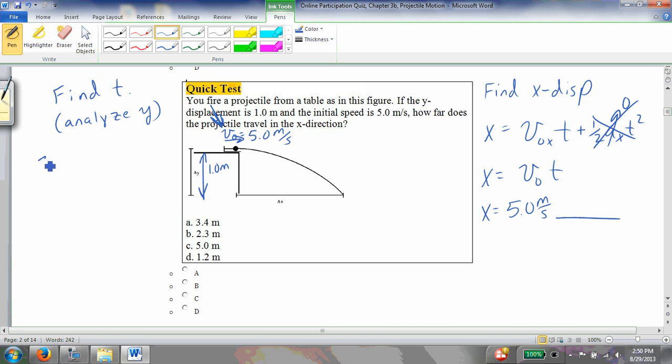All right, so find the t. Let's write down what we know. We know that y is equal to negative 1.0 meters. That's saying that y_not equals 0 up here, and so down here, y final is negative 1. We know that the acceleration in the y direction is minus 9.8 meters per second squared. And we also know that v_not_y, because of the way this projectile is being fired, is 0 meters per second. All right, so I have y and the acceleration and v_not_y. I can use this.